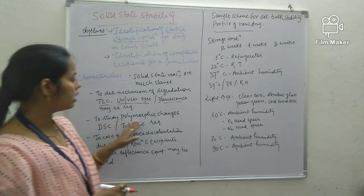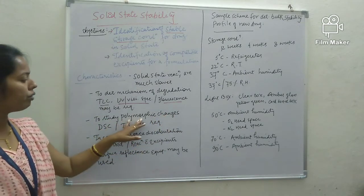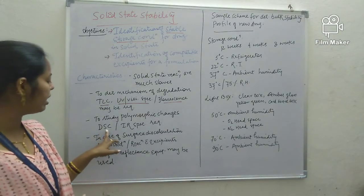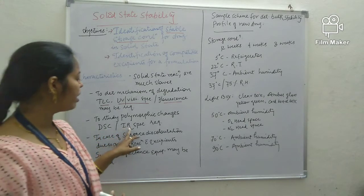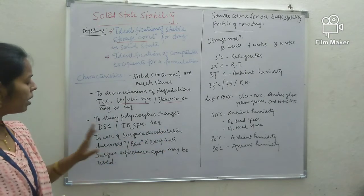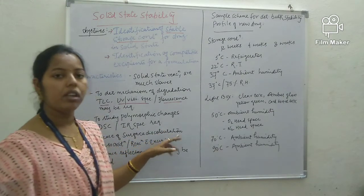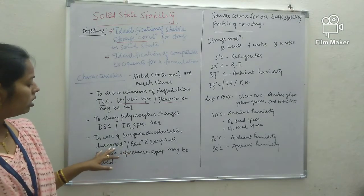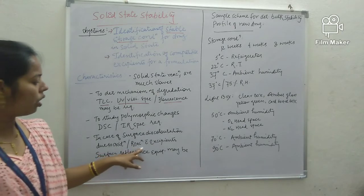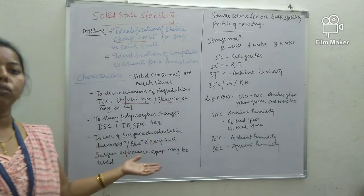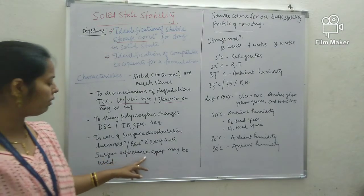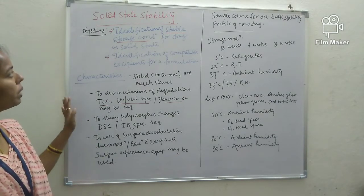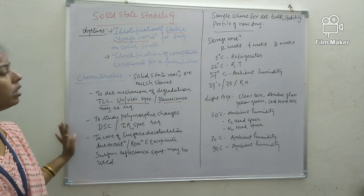To study polymorphic changes in the formulation in solid state, we use DSC — differential scanning calorimetry — or infrared spectroscopy. In the case of surface discoloration, if there is a color change on the surface of the solid dosage form, this could be due to oxidation or reaction with other excipients or additives in the formulation, and we use surface reflectance equipment to determine such changes.